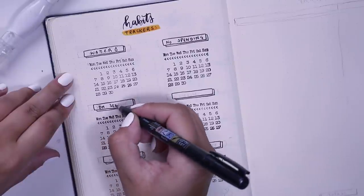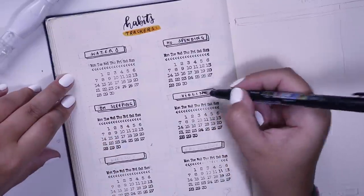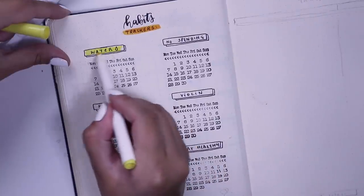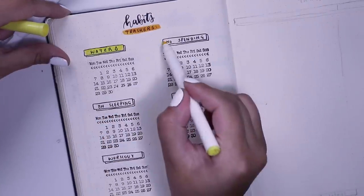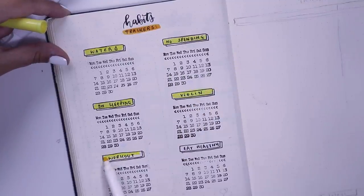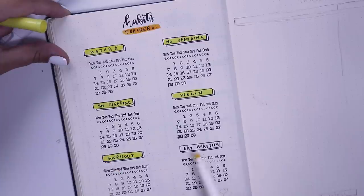Then I went in and added all the boxes where I was going to write what habits I'm tracking for each habit tracker. And of course, highlighting them in with my Crayola super tip.